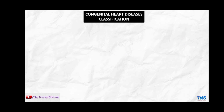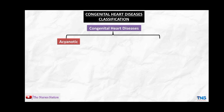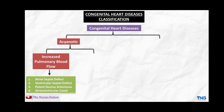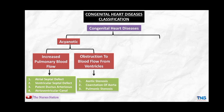Combining both classification systems, congenital heart diseases are divided into cyanotic and acyanotic. The acyanotic group is divided into increased pulmonary blood flow — including atrial septal defect, ventricular septal defect, patent ductus arteriosus, and atrioventricular canal — and obstruction to blood flow from ventricles, including aortic stenosis, coarctation of the aorta, and pulmonic stenosis.